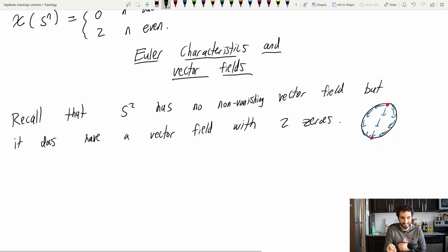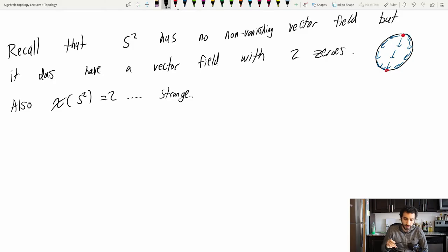Let's start putting some stuff together. Also, the Euler characteristic of S2 is equal to 2. Strange. Also remember that the odd dimensional spheres have a non-vanishing vector field. We constructed one explicitly. And those have Euler characteristic zero. So what's going on here? Let's gather some more evidence.